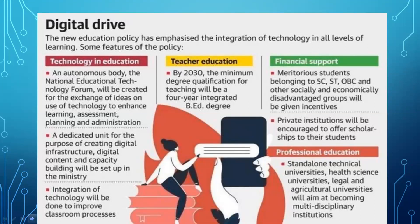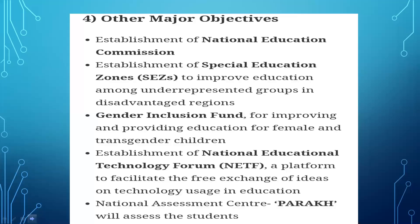Standalone technical universities, health science universities, legal and agriculture universities will aim to become multidisciplinary institutions. Other major objectives include: establishment of a National Education Commission; establishment of Special Education Zones to improve education among underrepresented groups in disadvantaged regions; a Gender Inclusion Fund for improving education for females and transgender children; and establishment of National Education Technology Forums as a platform for the free exchange of ideas on technology use in education.